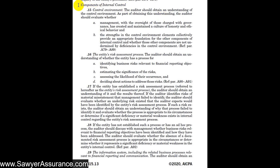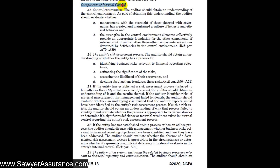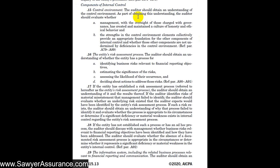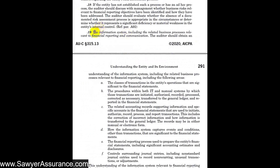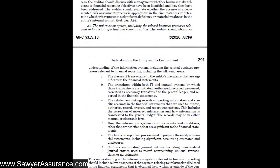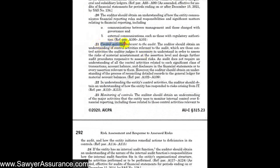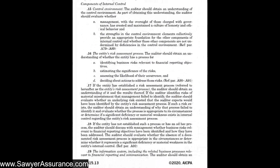The standard sets up for us the components of internal control, and they have five components: the control environment, the entity's risk assessment process, the information system, control activities, and monitoring of controls. Each of these is a detailed part of understanding the components of internal controls, and we will take each of them in turn in these videos.